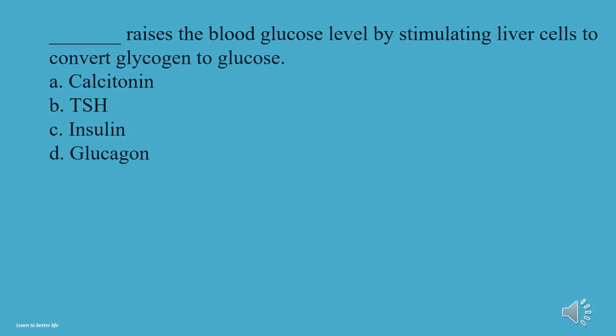What raises the blood glucose level by stimulating liver cells to convert glycogen to glucose? A, Calcitonin. B, TSH. C, Insulin. D, Glucagon. The answer is D, Glucagon.